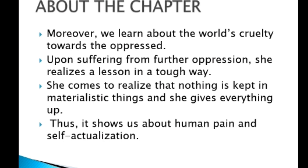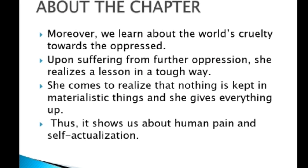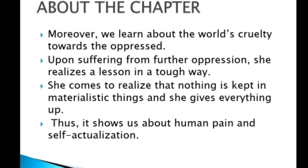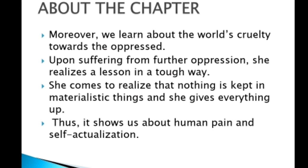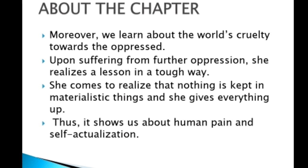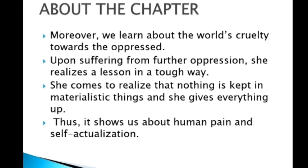The narrator had noticed many precious items missing from their places. Her mother told her that Mrs. Dorling was helping by taking her tablecloth, silver cutlery, antique plates, large vases and crockery to her house to keep in safe custody, in case they had to leave the house suddenly.